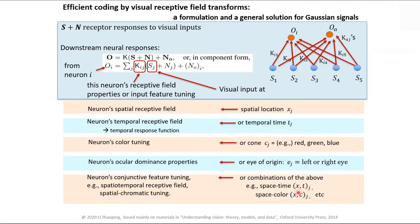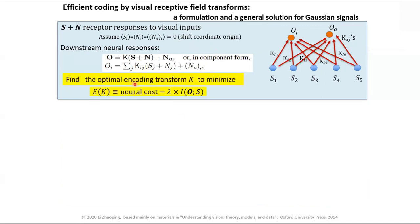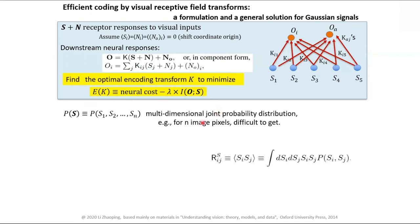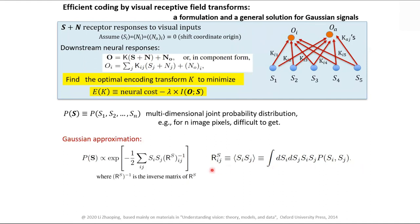If that's the case, we've understood something. Now assume input noise is i.i.d. — let's say Gaussian. Find the optimal transformation k to minimize the objective. It's a multi-dimensional space, so we use a Gaussian approximation based on the two-point correlation function, using ensemble average notation with brackets. Once you have the two-point correlation you can write this multi-dimensional signal as a Gaussian approximation.